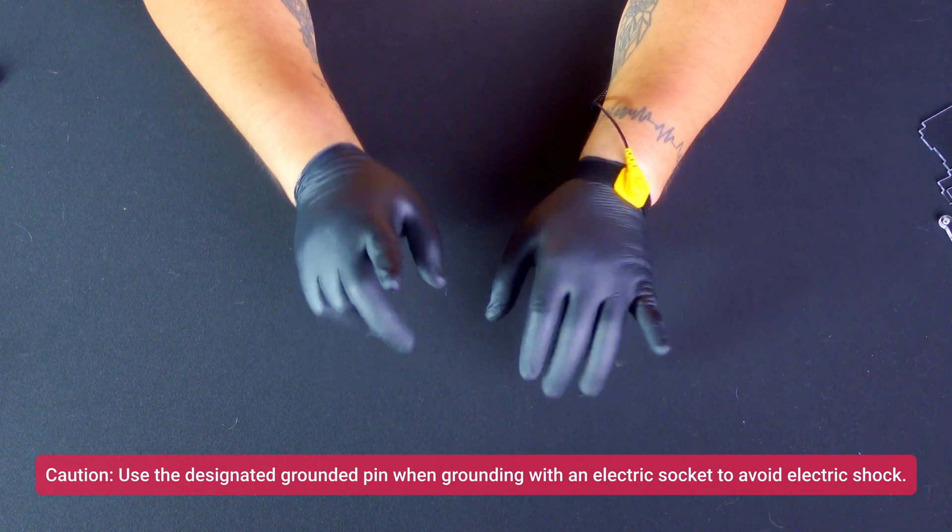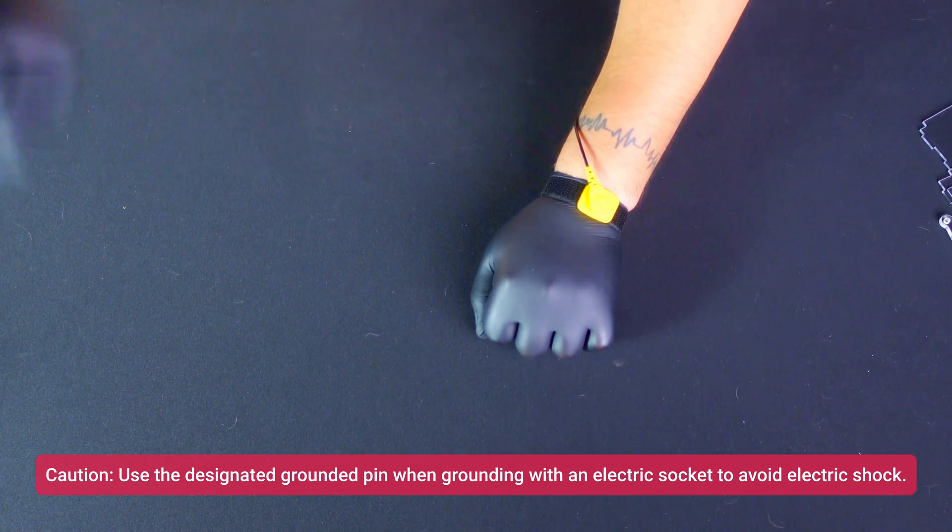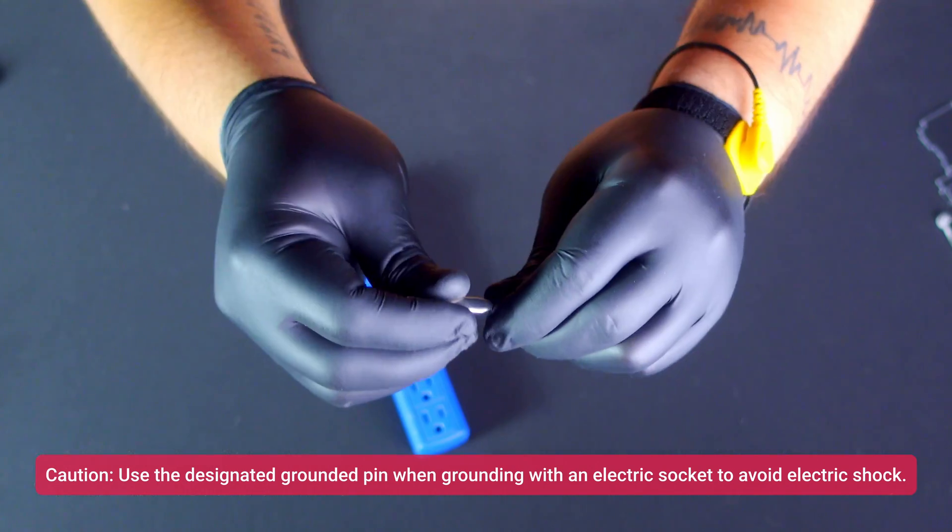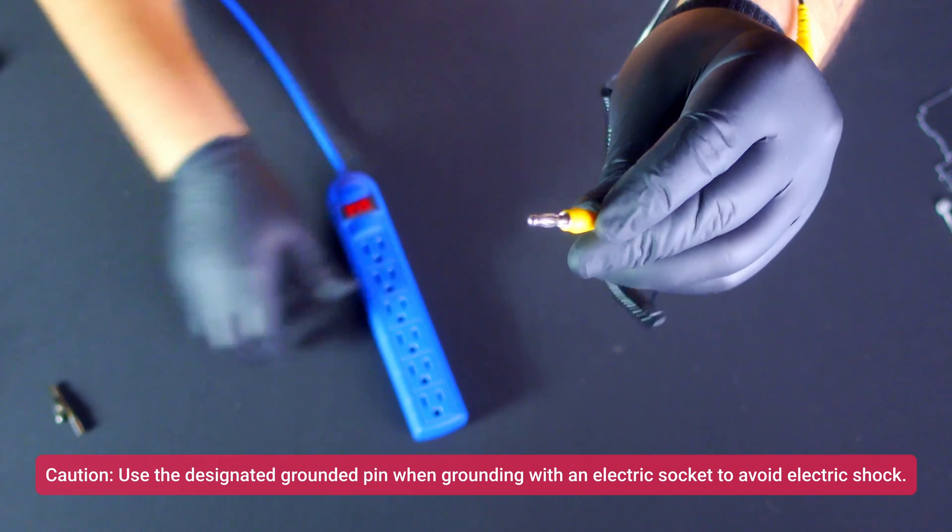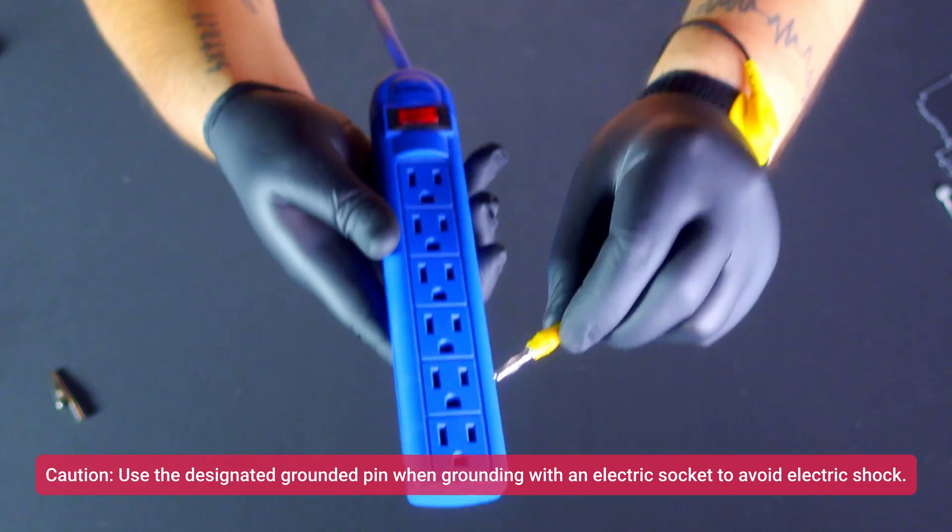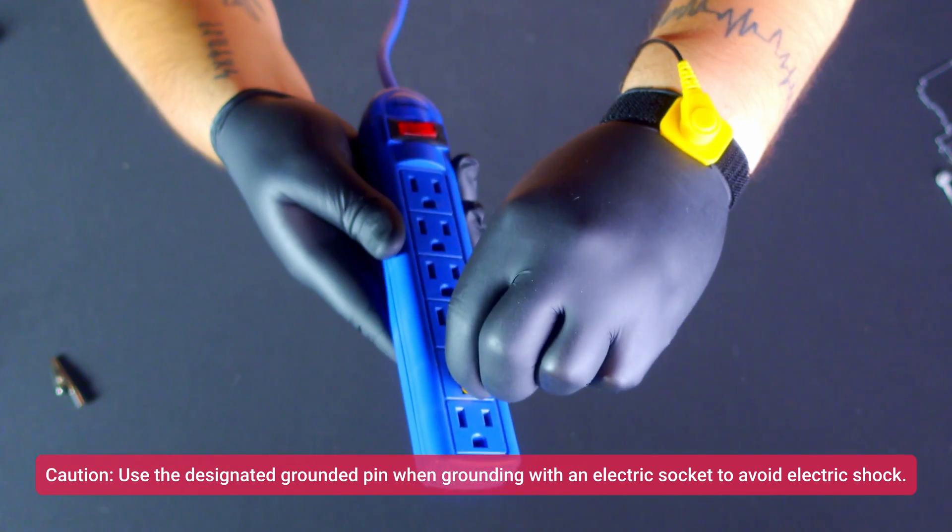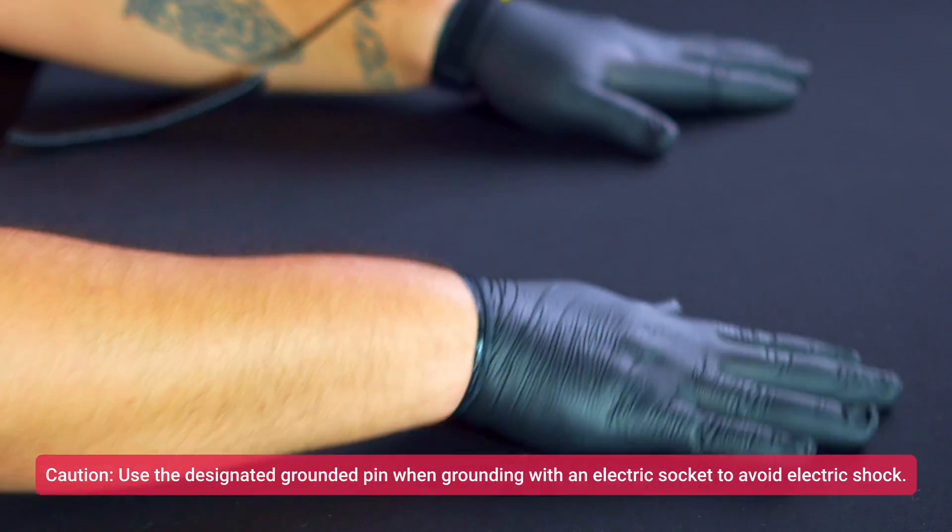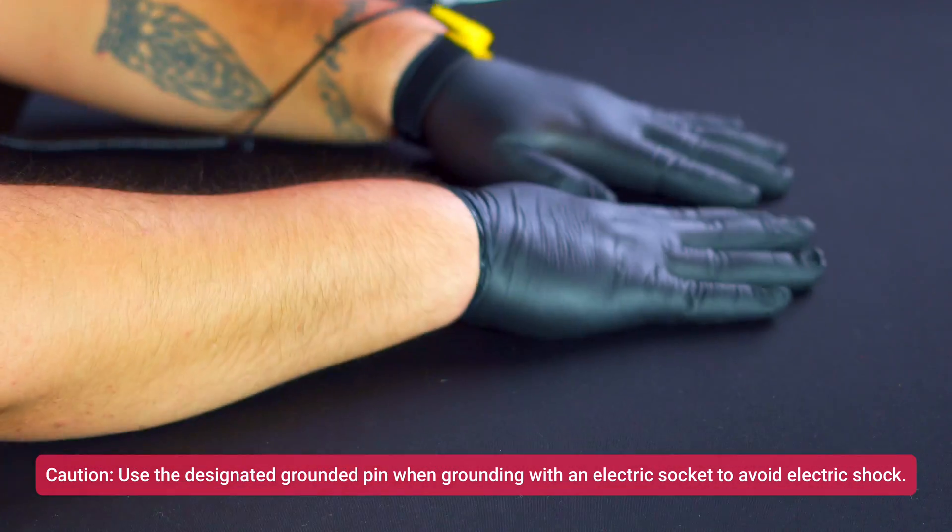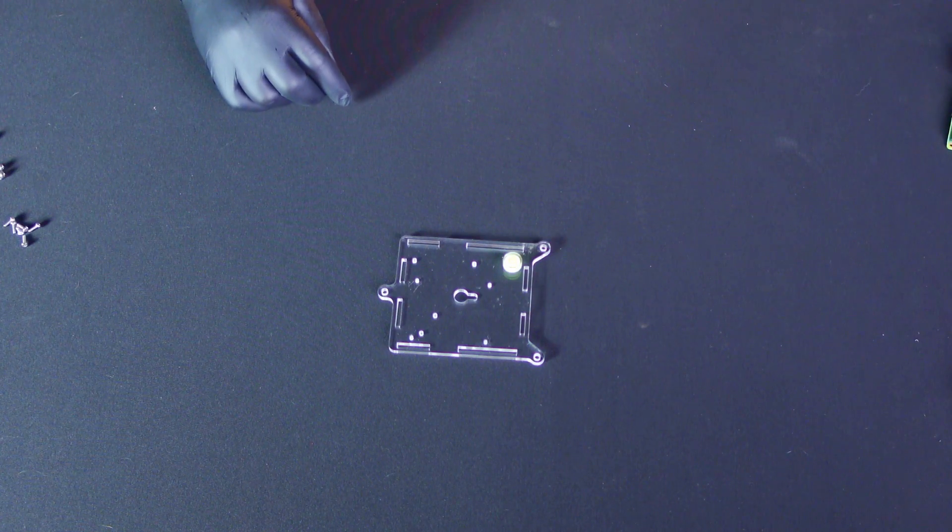Remember, ESD protection is crucial when handling the Raspberry Pi and Raspberry Shake board. This involves wearing anti-static gloves, using an anti-static wrist strap properly grounded by inserting it into the round ground receptacle of a power outlet, and working on a wooden surface or an ESD mat to prevent electronic damage.